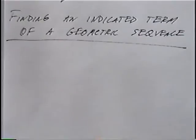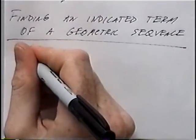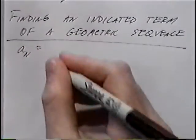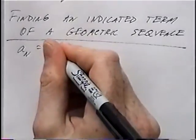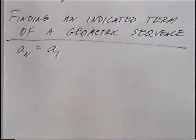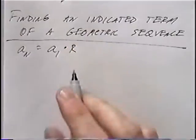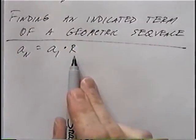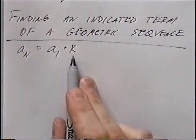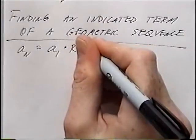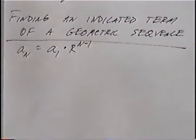The next section is finding an indicated term of a geometric sequence. The formula is: a sub n equals a sub 1 times r to the exponent of n minus 1. Here, a sub n is the final term, a sub 1 is the first term, r is the rate, and n is the number of terms in the sequence.